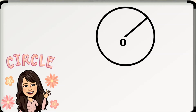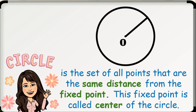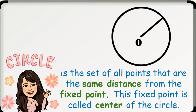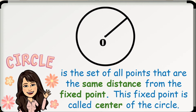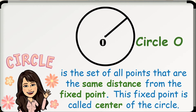But mathematically speaking, what does circle mean? A circle is the set of all points that are the same distance from a fixed point. This fixed point is called the center of the circle. You name a circle by its center. The circle above has point O as its center, therefore it is called circle O.